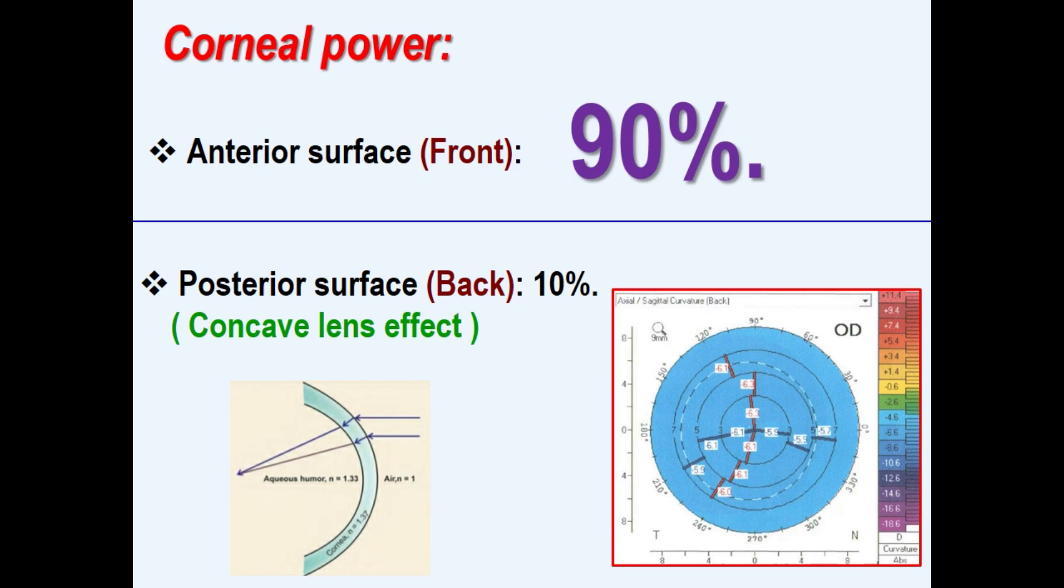The posterior surface has a minus power of minus 6 diopters because light diverges slightly as it passes from a high refractive index medium to a lower refractive index one. Anyhow, the corneal back surface is less important in refraction.